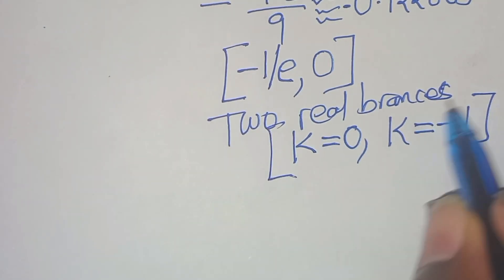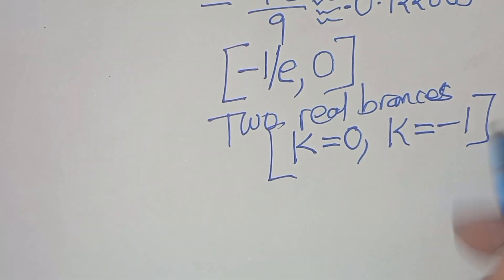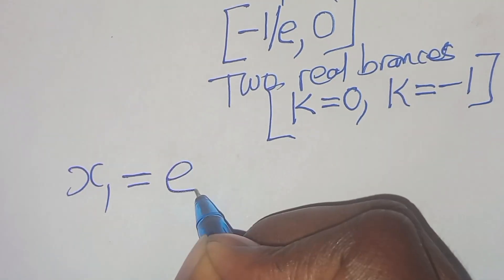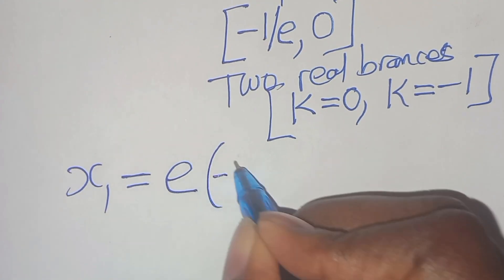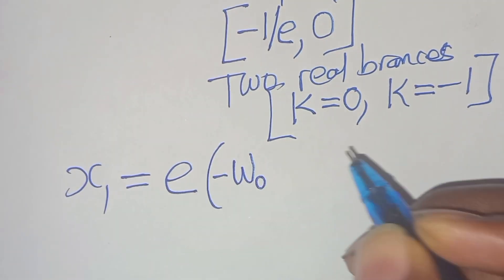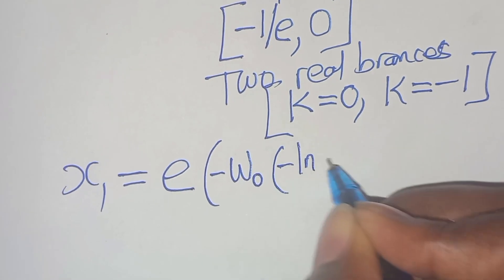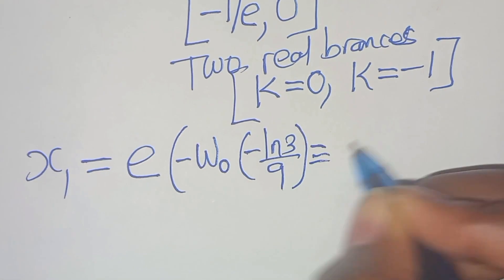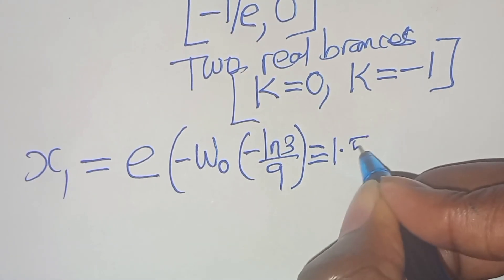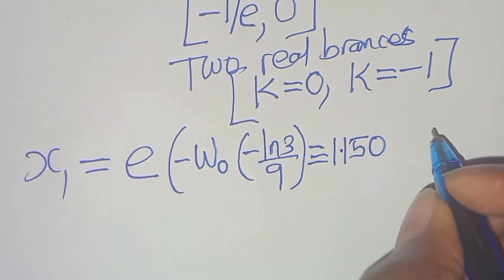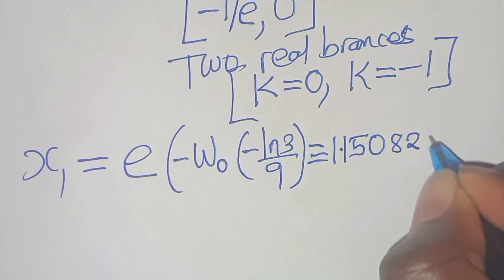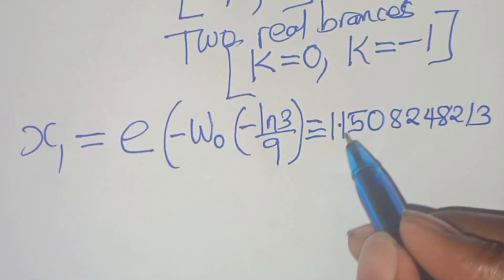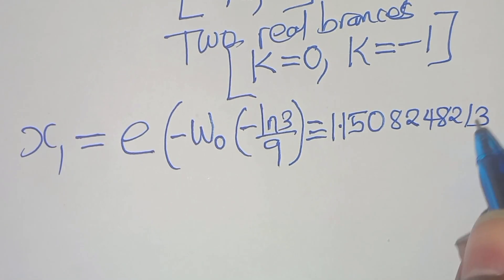These are the two branches: k equal to 0 and k equal to minus 1. This implies that x₁ will be equal to e raised to the power of minus W subscript 0 of (minus ln(3) over 9), and this is approximately equal to 1.1508248213.